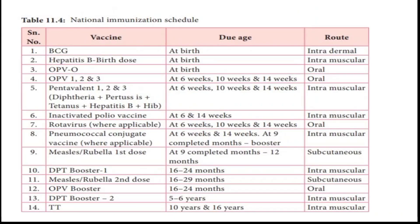A new vaccine has been added to the National Immunization Schedule: Pneumococcal Conjugate Vaccine (PCV). It has 3 doses — first dose at 6 weeks, second dose at 14 weeks, and third dose (booster dose) at 9 completed months. It is given intramuscularly.